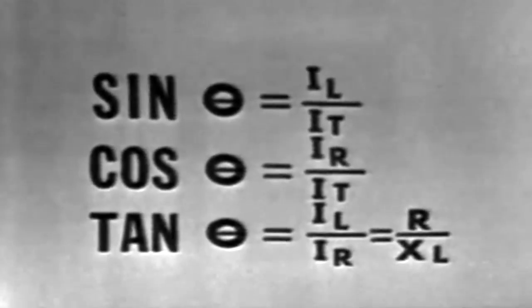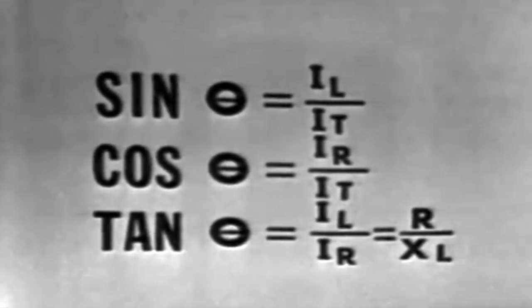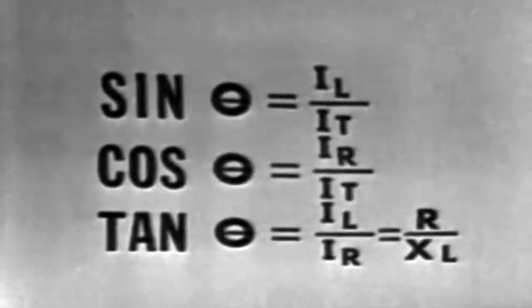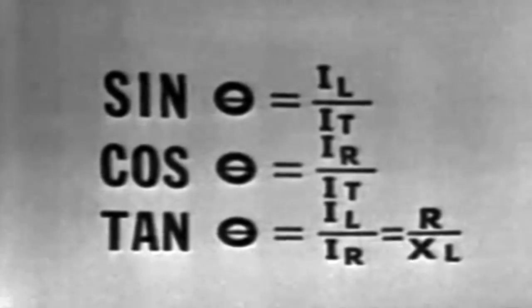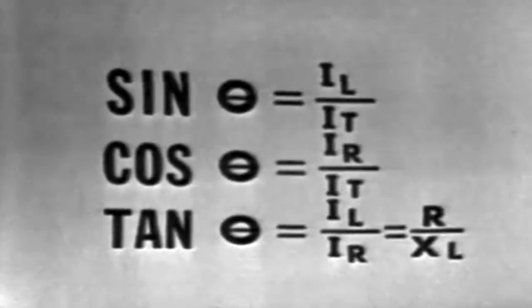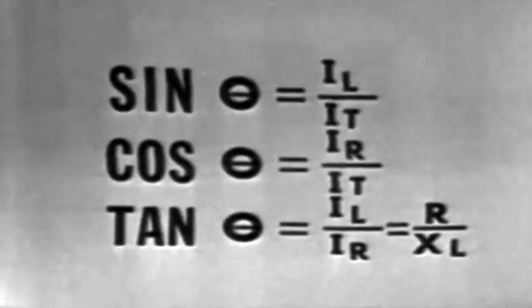Now, the trig function you use will be determined by what you want to find out about the circuit, and what information you already have. For example, the phase angle could be determined with only the reactance and the resistance of the circuit known.